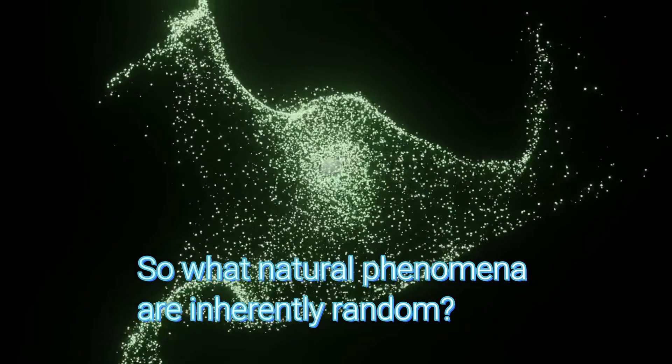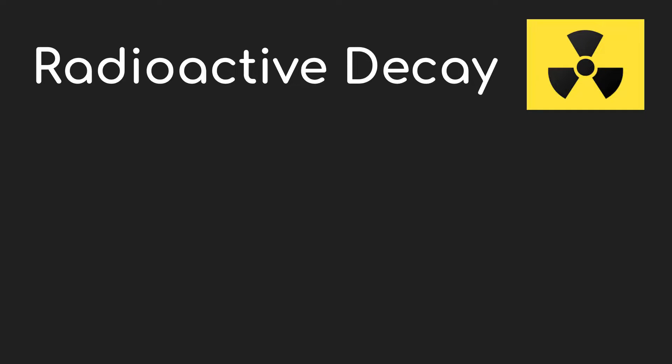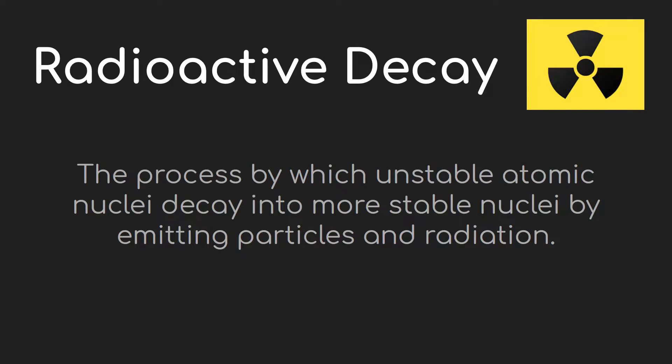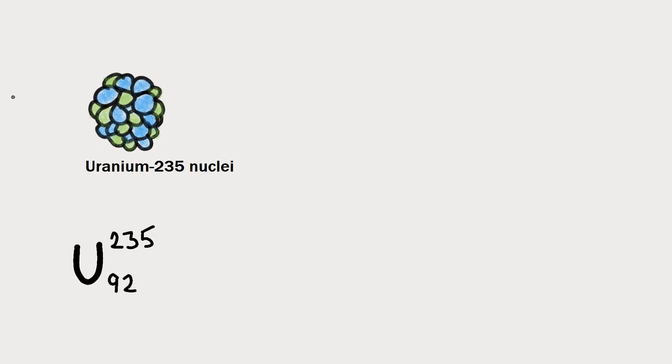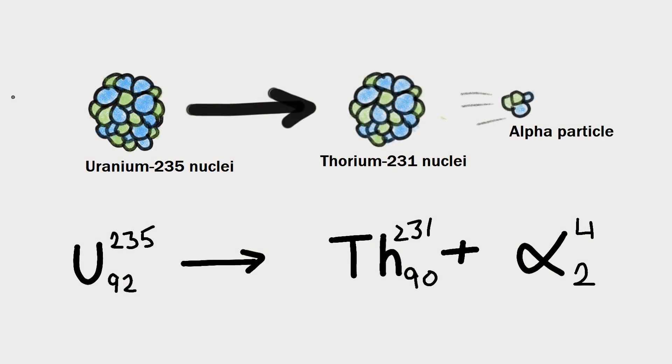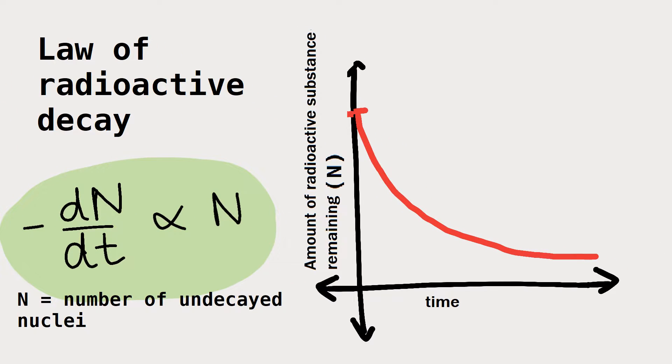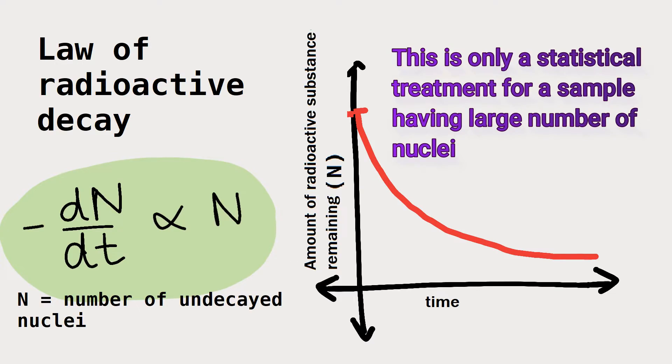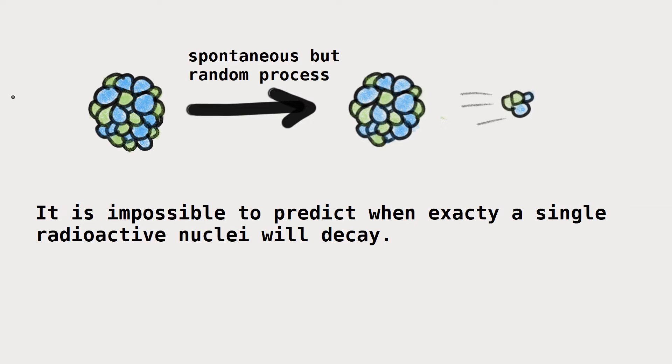One prominent example is radioactive decay. Radioactive decay is the process by which unstable atomic nuclei gradually decay into more stable nuclei by emitting particles or radiation. For example, uranium-235 nucleus has the tendency to emit an alpha particle and transform into a thorium-231 nucleus. For a large number of nuclei, the law of radioactive decay can predict the amount of nuclei decaying in a particular time, but this is only a statistical treatment. If you take a single uranium-235 nucleus, you will never be able to predict when it will decay. Its probability of decaying at a particular time is random.